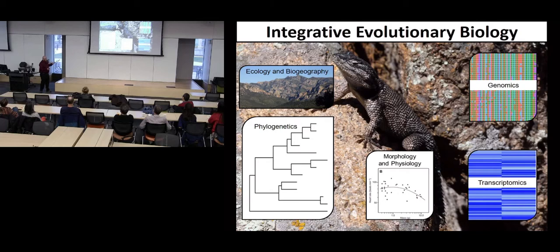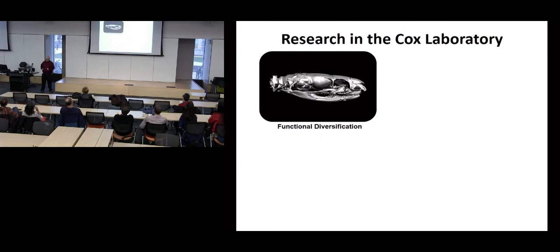I consider myself an integrative evolutionary biologist — interested in questions motivated by evolution, but I'll often study physiology or things in a phylogenetic context. Work in my laboratory is relatively diverse, but can be segmented into a few major categories. The first is functional diversification: diversification of traits that have links to animal ecology. One study we're working on right now is understanding the evolution of skull morphology, feeding, and trophic gene expression in a cool group of snakes called Tantilla.